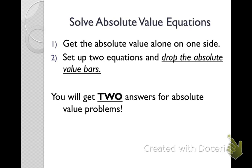Here are the steps to solving an absolute value equation. First, we need to get the absolute value alone on one side of the equal sign. Next, we need to set up two equations, drop the absolute value bars, and solve each of them. You will always get two answers for absolute value problems. There's one case where you won't, and you'll go over that in your teacher talk.